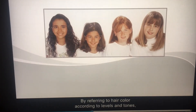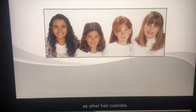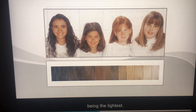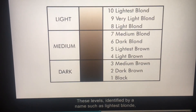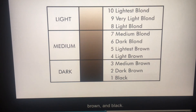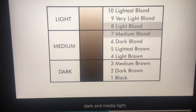By referring to hair color according to levels and tones, you will be speaking the same language as other hair colorists. The level of hair color is identified from 1, being the darkest, to 10, being the lightest. These levels — identified by a name such as lightest blonde — fall into one of the three major fields of color: light, medium, and dark, or blonde, brown, and black. These categories can be further subdivided into medium dark and medium light.